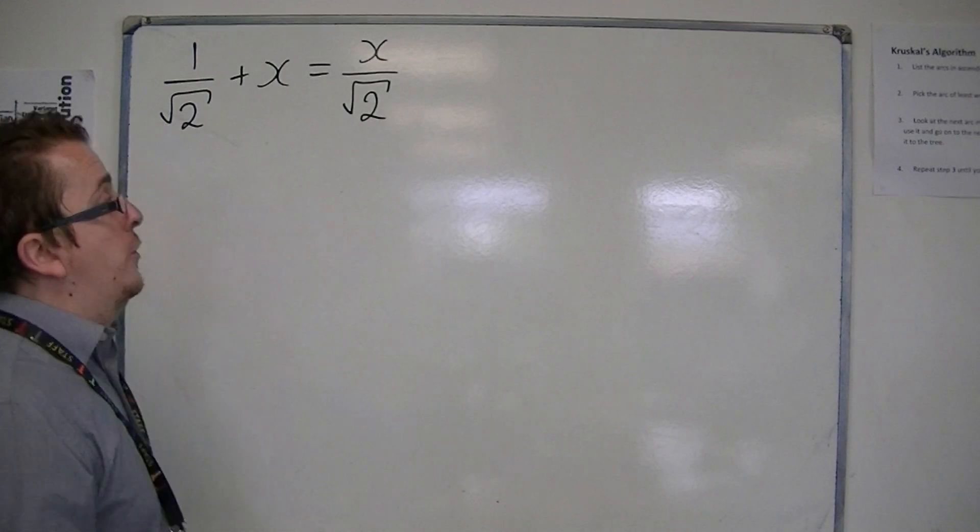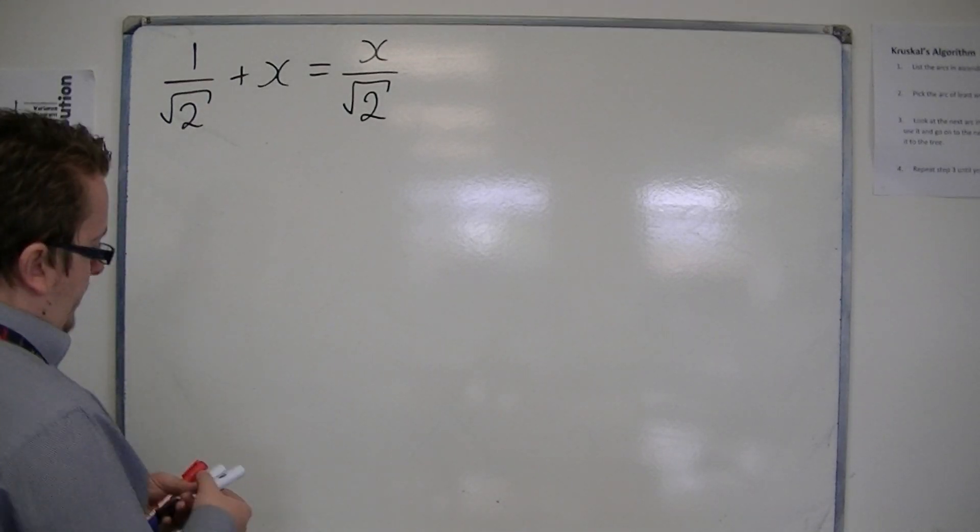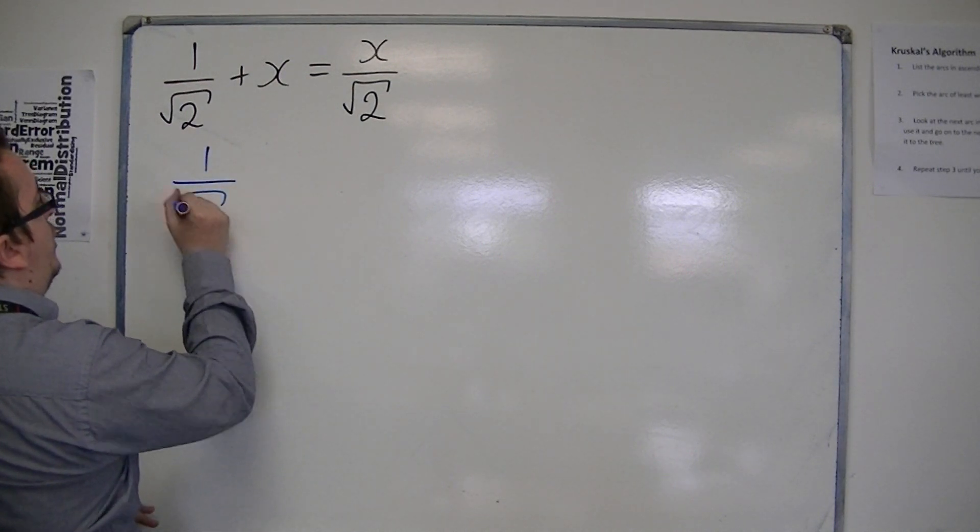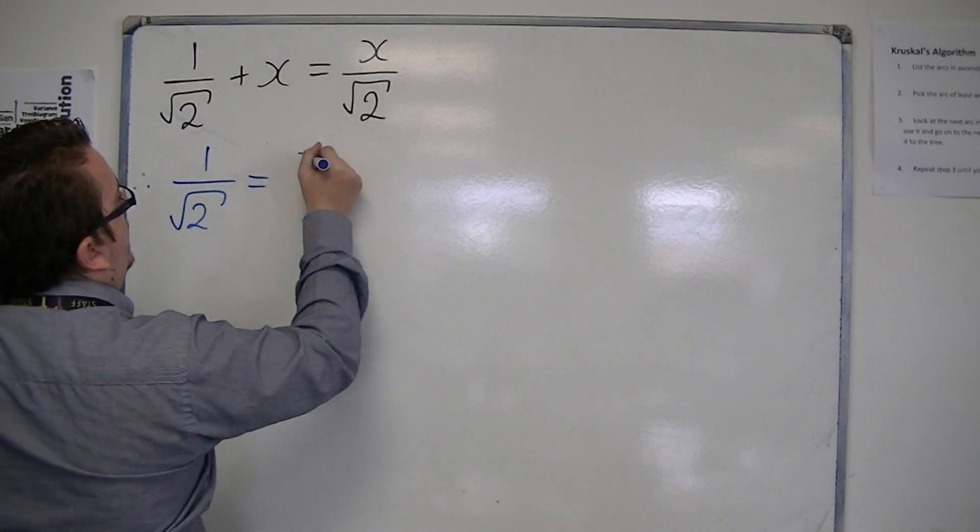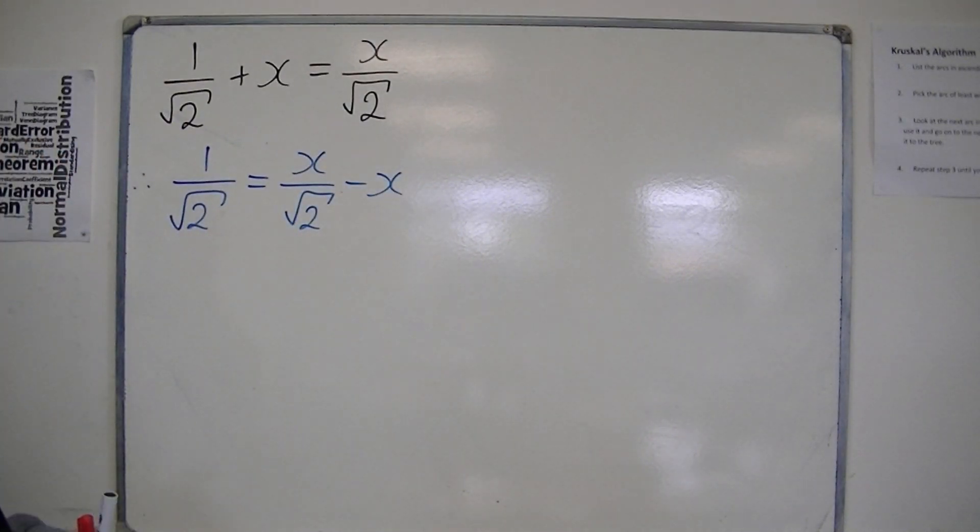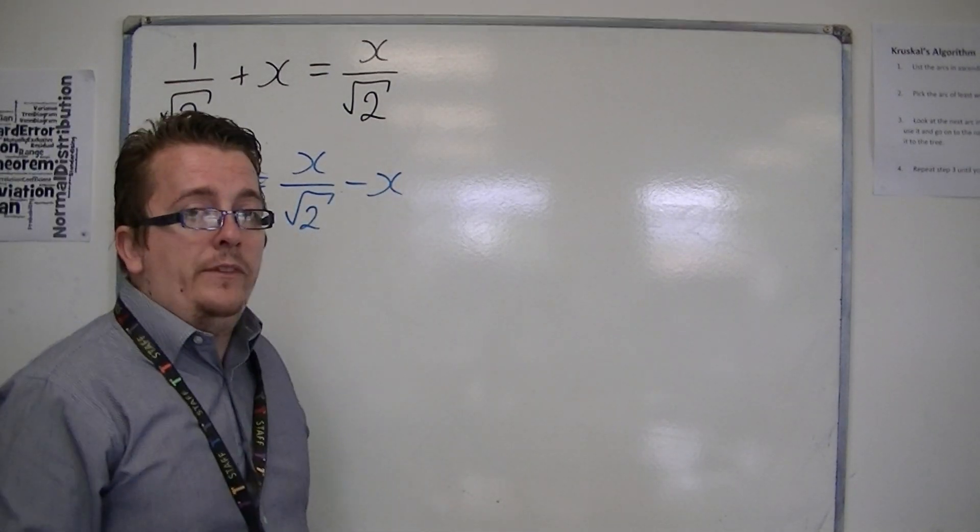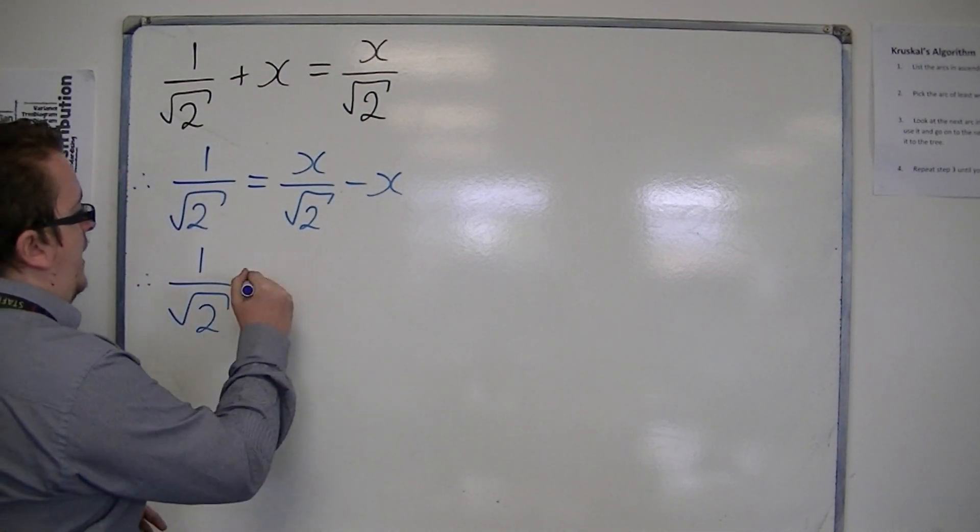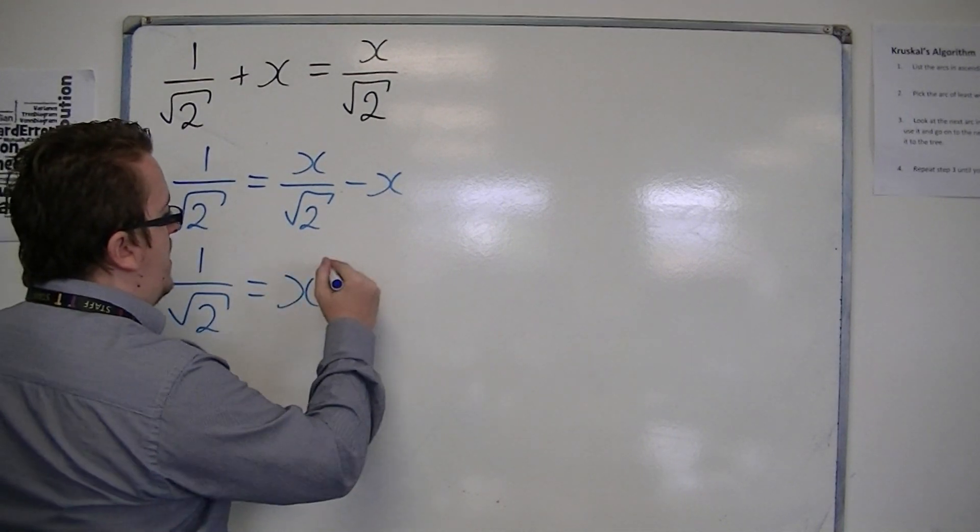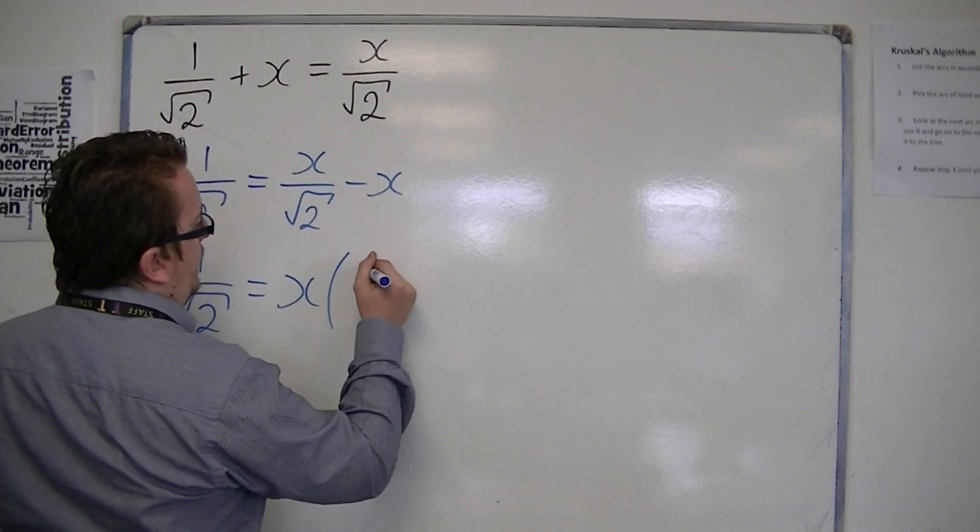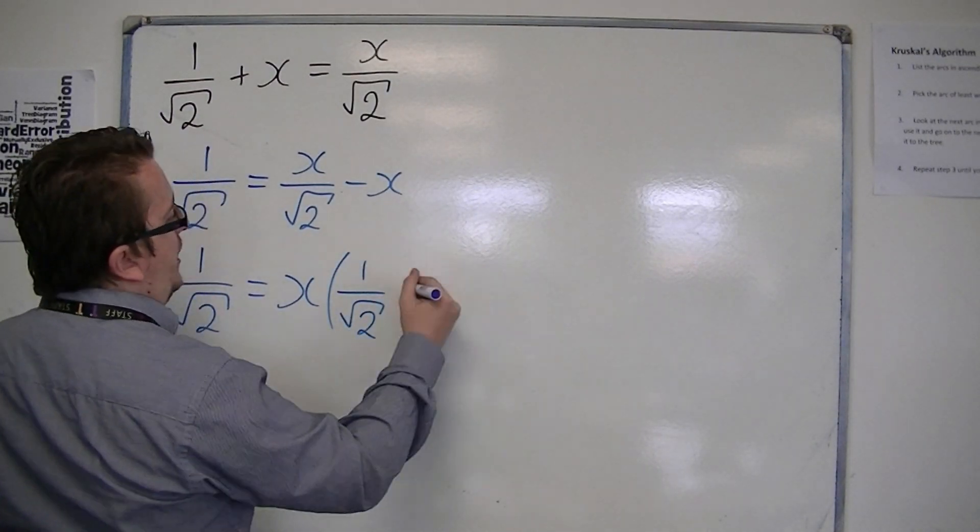The first step is to make sure that all the x's are on one side of the equation. So I'm going to take x from both sides first. So I'm going to have 1 over root 2 is equal to x over root 2 take away x. Then I'm going to have to make sure I've factorized the right-hand side to get the x's by itself. So I've got 1 over root 2, and I'm going to take x outside of a bracket. And inside the bracket, I'm going to have to have 1 over root 2 take away 1.